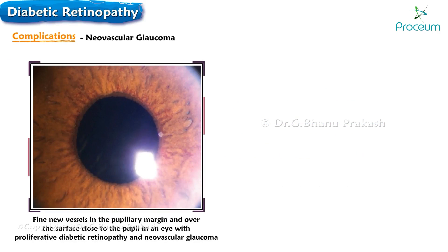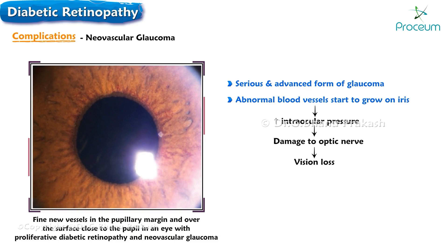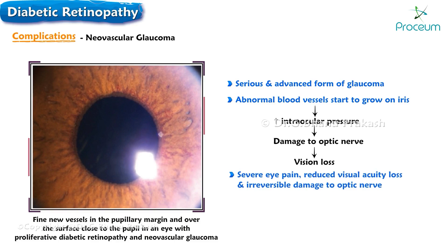Neovascular glaucoma is a serious and advanced form of glaucoma that can occur as a complication of proliferative diabetic retinopathy. In this condition, abnormal blood vessels grow on the iris, hindering the normal flow and drainage of fluid from the eye. As a result, intraocular pressure increases, causing significant damage to the optic nerve and leading to vision loss. Individuals may experience severe eye pain, reduced visual acuity, and irreversible damage to their vision.